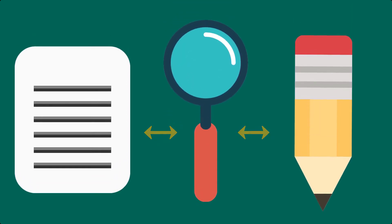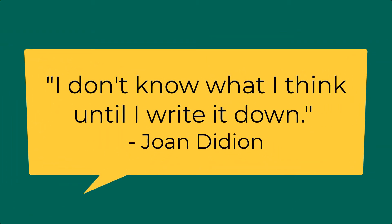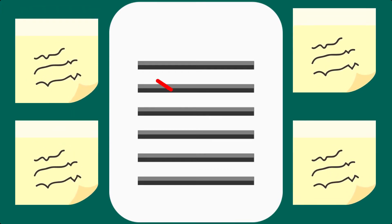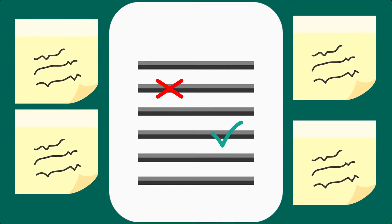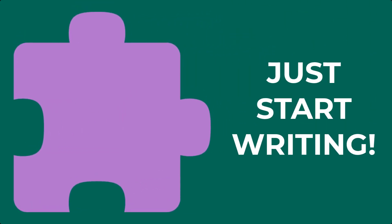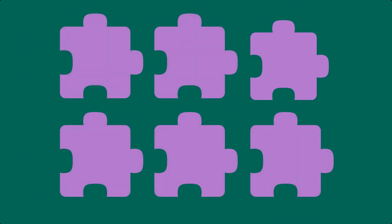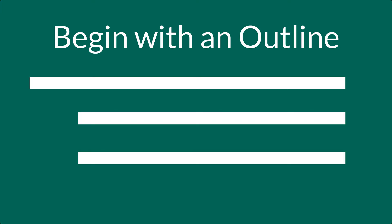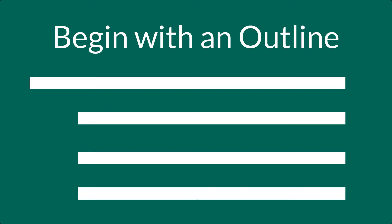Joan Didion once wrote, "I don't know what I think until I write it down." This is as applicable to writing an academic literature review as it is to crafting an entire book of creative nonfiction. Only when you put pen to paper or fingers to keypad can you really begin to see how well your ideas and the sources you're using do or do not fit together. It's like assembling a jigsaw puzzle — you won't know what you're missing until you actually start putting the pieces together. So it's better to start crafting your review even if the complete vision of your final paper is still a little bit fuzzy. At the very least, begin with an outline, which will change as you read, but gives you a place to organize your findings.